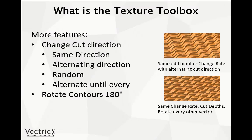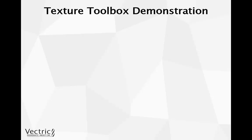The last option we have within the texturing toolbox is the ability to rotate contours. We can only rotate them 180 degrees, but you get to choose how often we rotate the next vector — it may be every other one, or we could choose to rotate one contour 180 degrees every four vectors. If we look at the images on the right-hand side, the top right picture uses the same change rate but with an odd number. Using an odd number as a change rate when alternating the cut direction causes them to cut into each other as they go from left to right and right to left. The picture underneath uses the same change rate and cut depths, then rotates every other vector. So what we're going to do now is demonstrate the Texture Toolbox within the software.